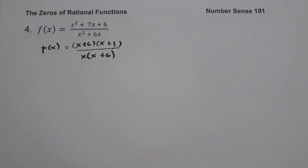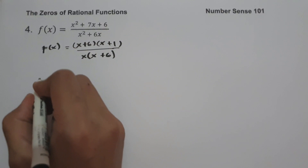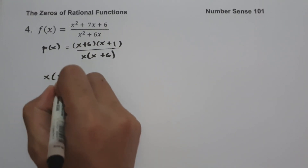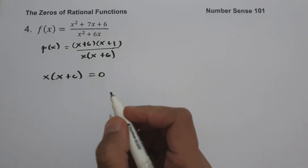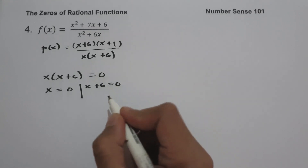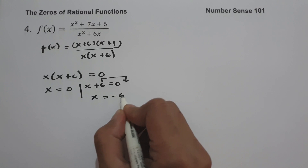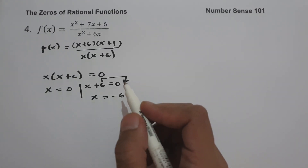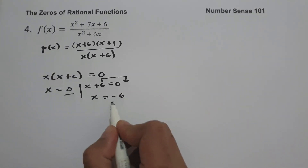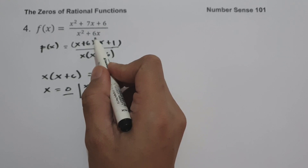The next step is to identify the restrictions — the values of x that make the function undefined. Setting x times quantity x plus 6 equal to 0 gives x equals 0 and x equals negative 6. Therefore, the restricted values are 0 and negative 6.